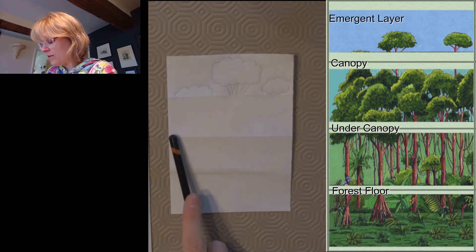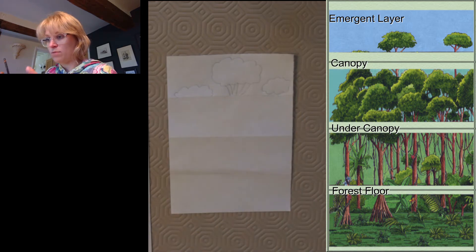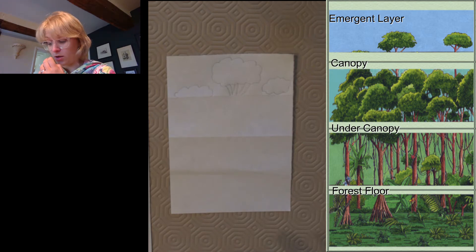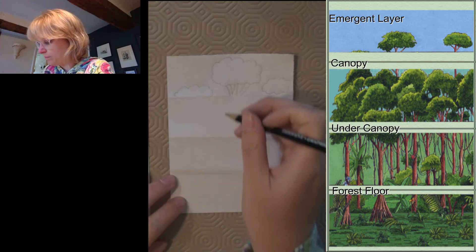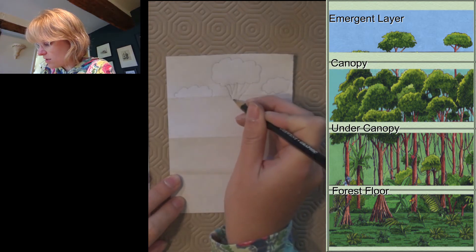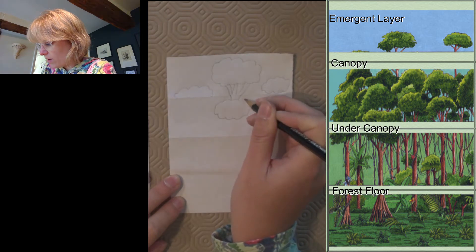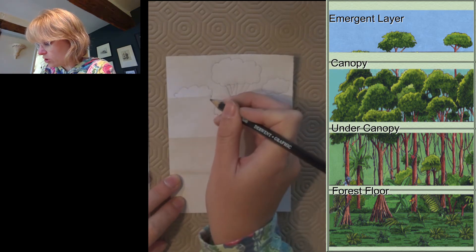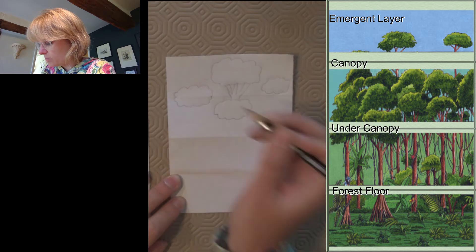The canopy layer, which is this layer, is where it's most full of trees, so you wouldn't be able to see any sky at all. I am going to just extend this branch a little bit, but then another tree is going to get in the way, and finish off this nice bushy tree.